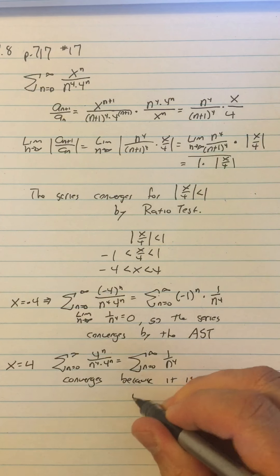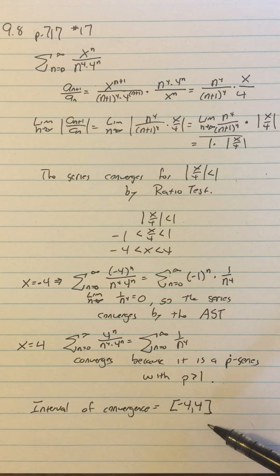So now I know that the interval of convergence is negative 4 to 4. And all this work of checking the endpoints was just about are these brackets square or round. Since both of the endpoints converged, the interval of convergence is closed and has square brackets on both sides.